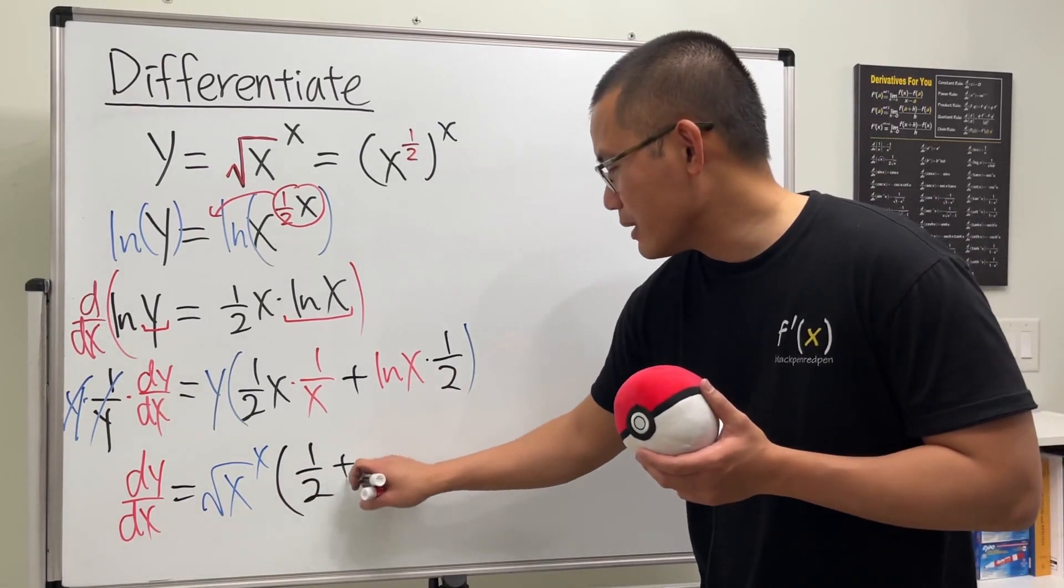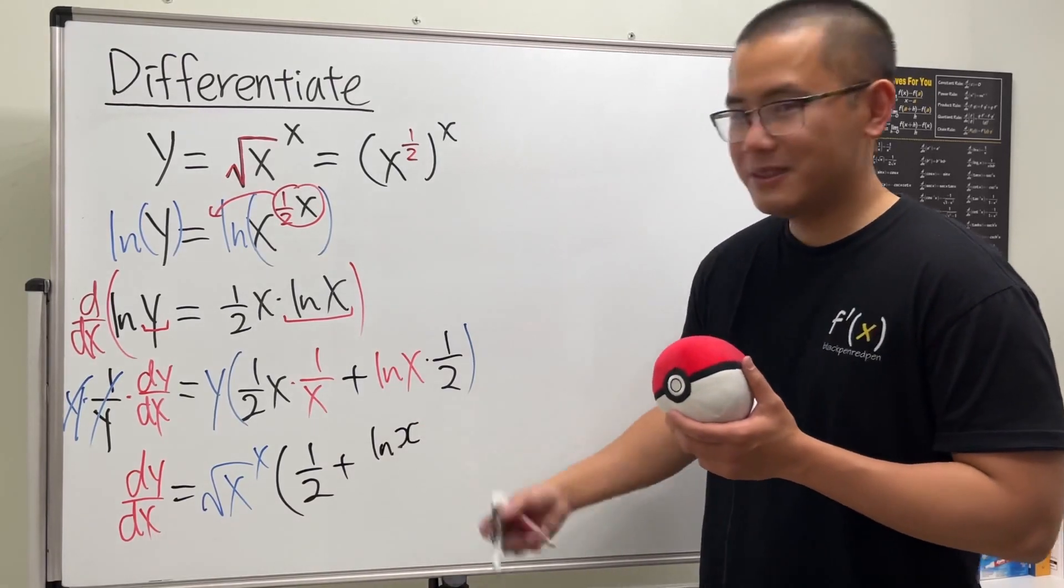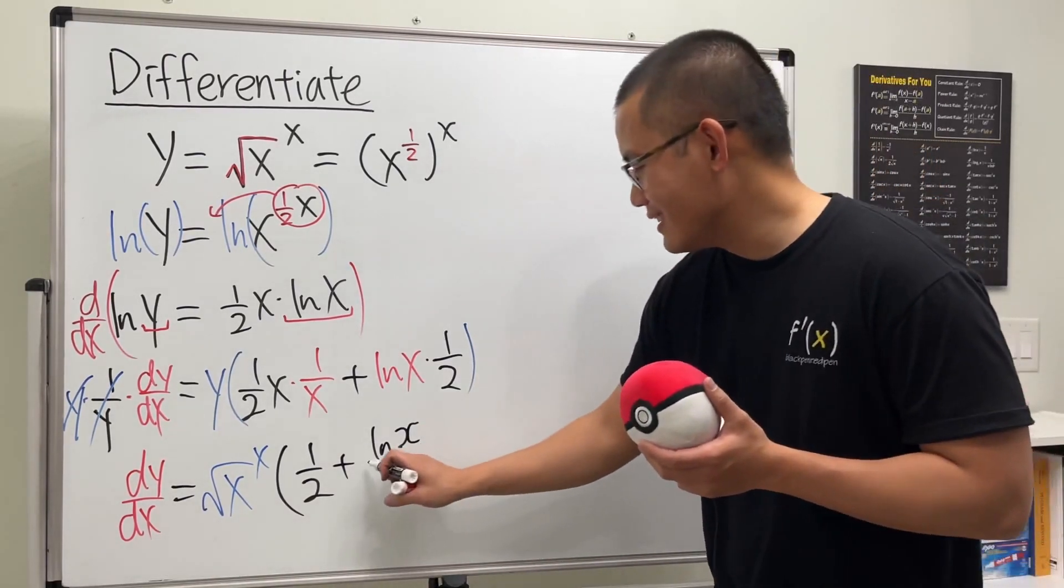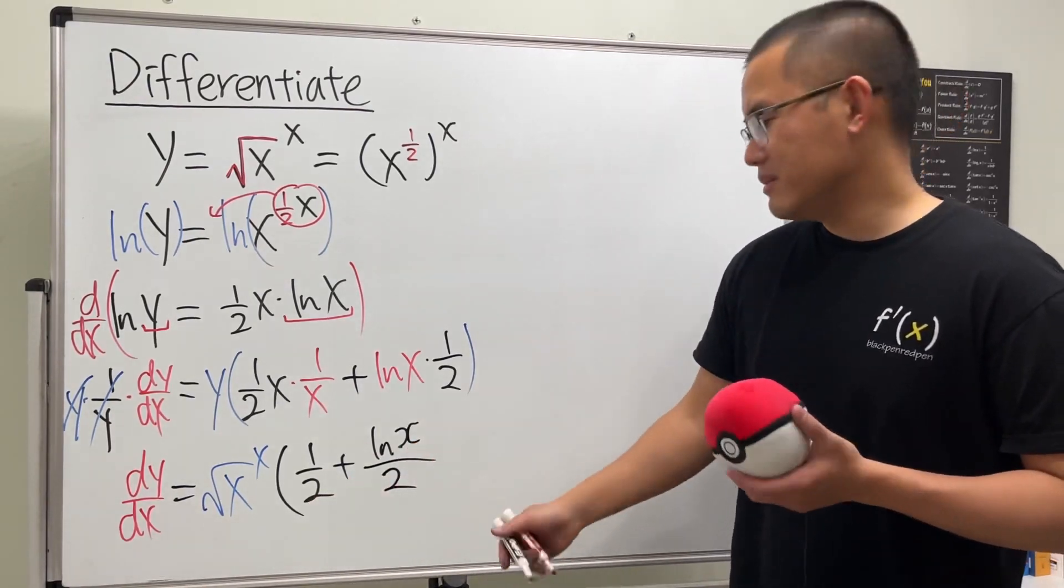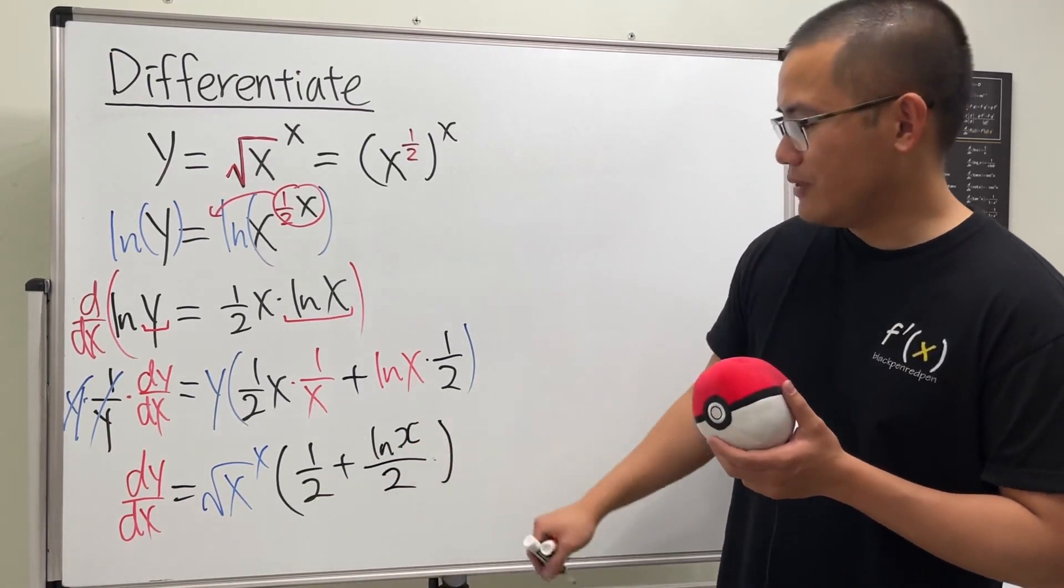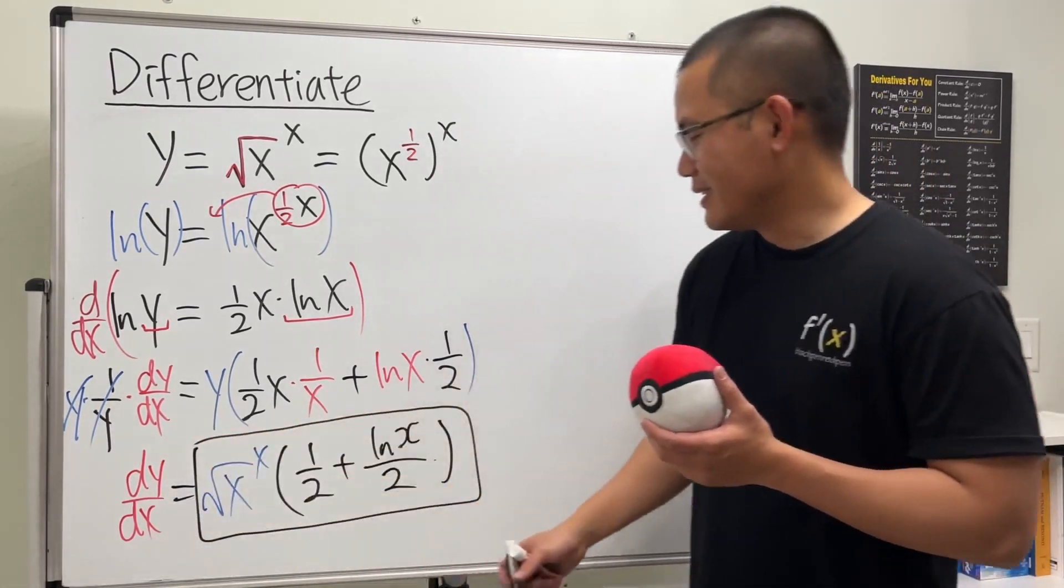This and that, we can write this plus ln x over two. Of course you can put the twos together, but I'm just going to leave it like that. That's it. Ln Chanel.